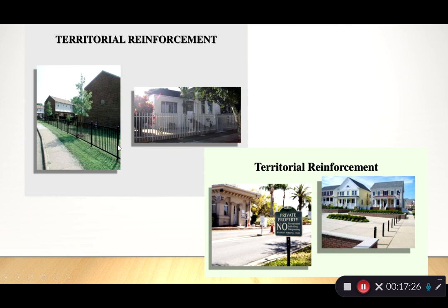Different examples of territorial reinforcement include a low fence just defining a boundary, a slightly taller fence with pointed tops that's harder to climb, signage indicating private property, a gatehouse demarcating the transition from public to semi-private space, and physical bollards keeping out cars while allowing pedestrians through into that transition zone. Each sends progressively stronger signals about access and ownership.